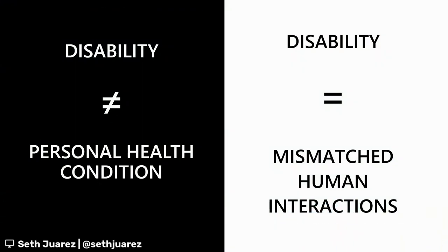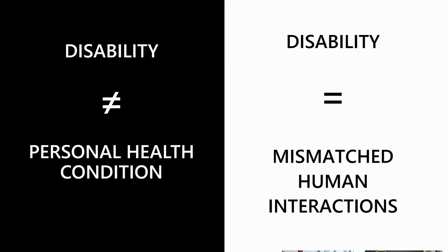There used to be this thing called the medical model of disability, which is the idea that disability is a personal health condition - kind of a deficit. But now, most people, and definitely at Microsoft, the way we look at it is disability isn't a personal health issue - you are disabled by society or by systems and how they're designed. The building only has steps and doesn't have a ramp; it's not because there's a problem with you, but because there's a problem with the way the system has been designed to exclude you. Disability is about a mismatch between what you're trying to do and what you're able to do, due to the design of a system or technology.